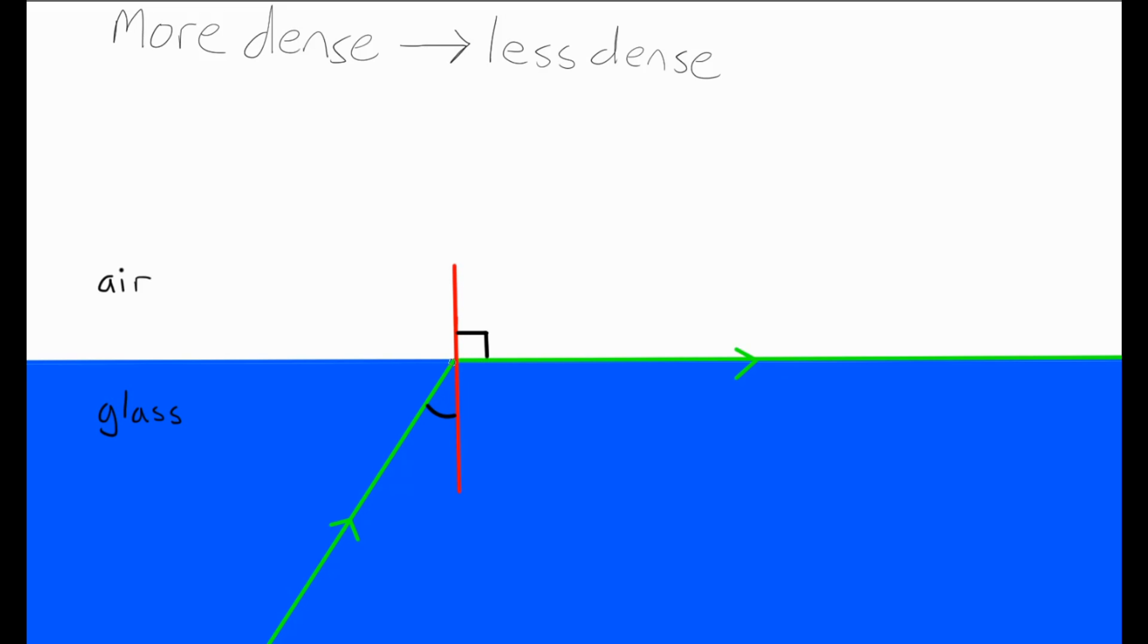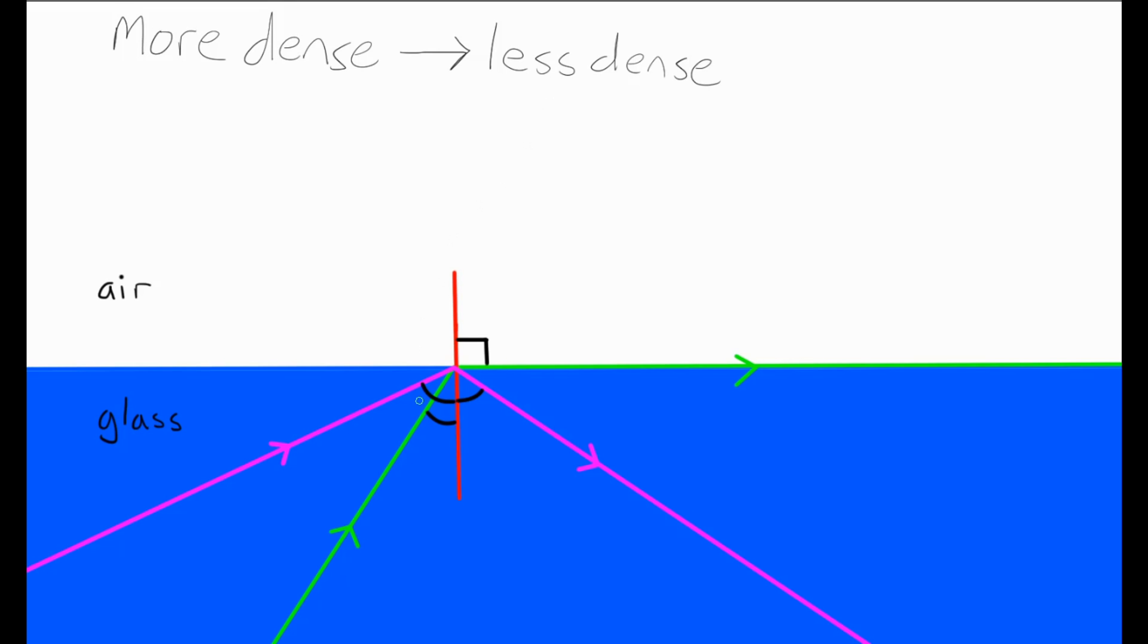The question I want to ask now is what would happen if we increased this angle of incidence so that we go beyond the critical angle? So what we've done here now is we've got another ray of light, and the angle of incidence measured towards a normal line here, the angle of incidence is bigger than the critical angle.